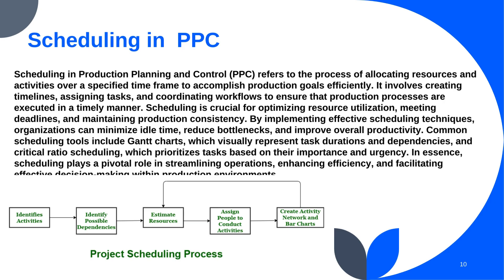Scheduling in production planning and control is a critical process that involves organizing and coordinating various production activities to optimize resource utilization and meet production targets efficiently. It encompasses the allocation of tasks, resources, and time frames to ensure that production processes flow smoothly and adhere to predetermined schedules. Effective scheduling in PPC helps minimize idle time, reduce production lead time, and improve overall productivity. By implementing scheduling techniques such as Gantt charts, critical path method, and just-in-time scheduling, organizations can achieve better visibility into production timelines. Scheduling also allows for the identification and mitigation of potential bottlenecks that may impede the production process.